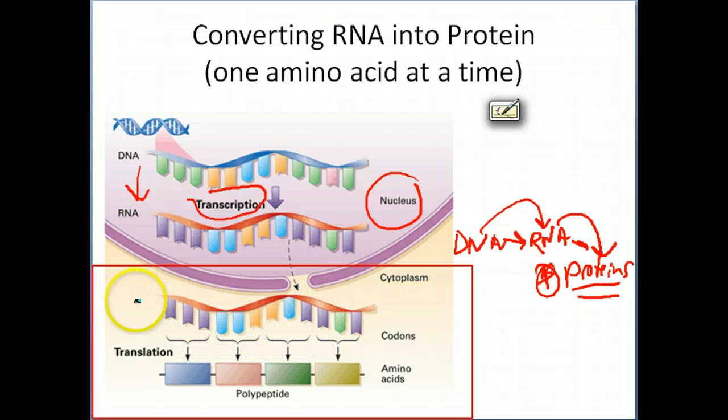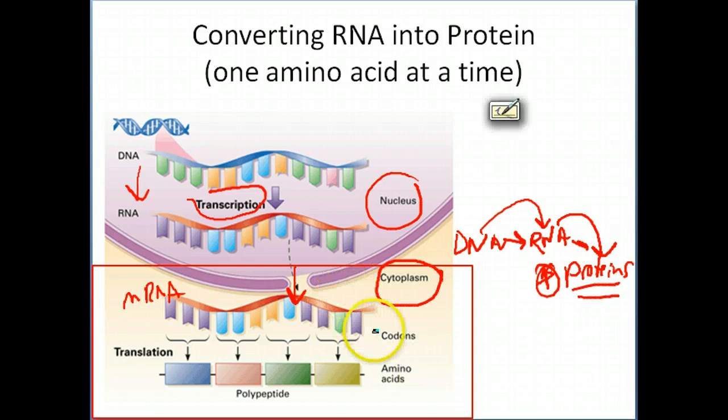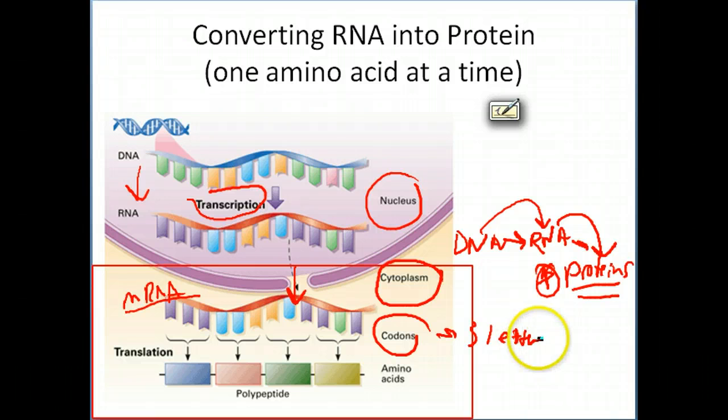Basically you get this messenger RNA that comes out of the nucleus through one of these nuclear pores and into the cytoplasm. So translation occurs in the cytoplasm. Now this picture is showing you, basically you have this messenger RNA transcript. And the first thing you have to do with it is break it up into what are called codons. Codons are these three letter sequences of RNA. So you can see here we've broken this one up into this codon.